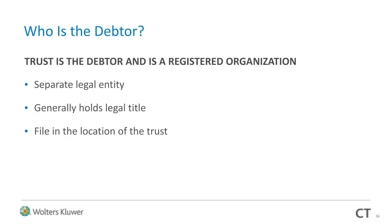Who is the debtor? First scenario: the trust is the debtor and is a registered organization — it is a separate legal entity that generally holds legal title, and you file in the location of the trust. Certain trusts, such as Delaware Statutory Trusts and Massachusetts Business Trusts, are separate legal entities distinct from their settlor or trustees and can generally hold legal title to the trust estate. In these cases, the debtor is the trust, and filing should be made in the trust's registered location. The location of the settlor, trustee, or any other party is really quite irrelevant.